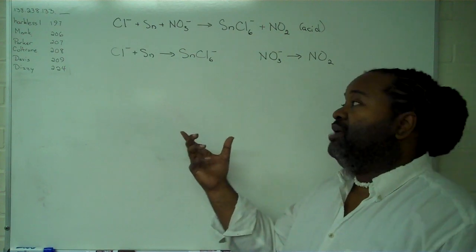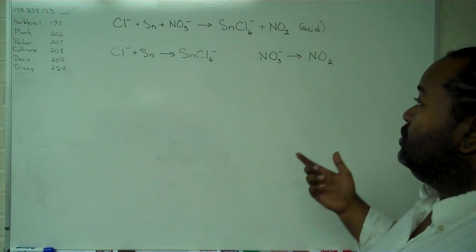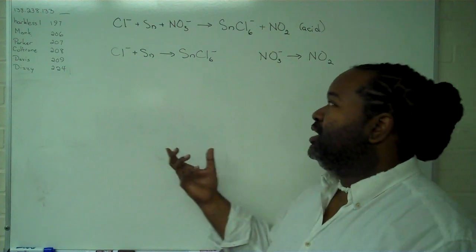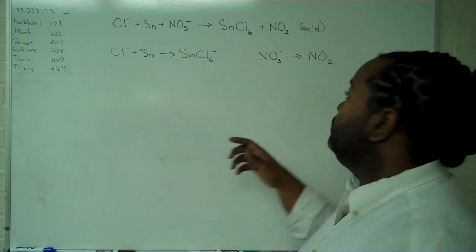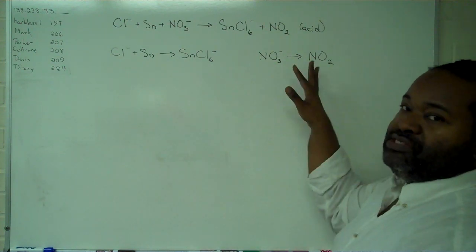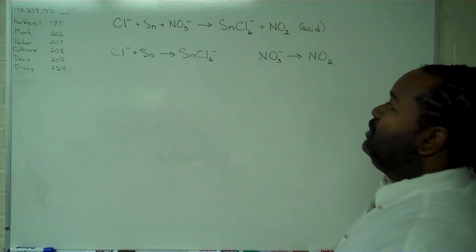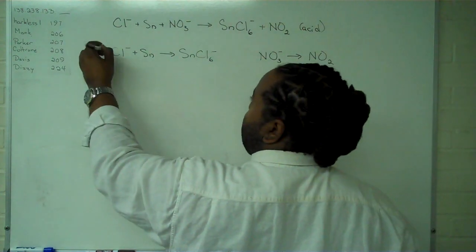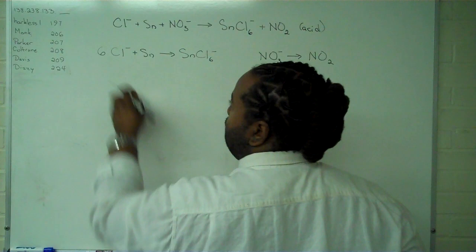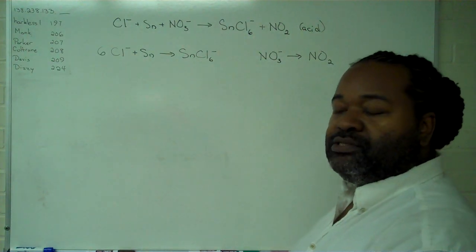The next step is to balance all of the matter that is not oxygen or hydrogen. In this case, for our nitrogen-based half reaction, that's already done. Here, we're going to need six, so that we have six chlorine atoms on both sides.